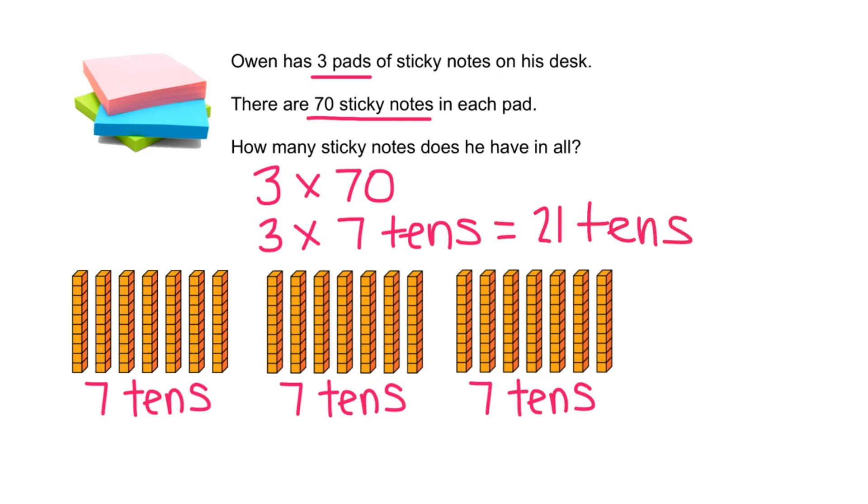That's a lot of tens. We'll regroup some to make hundreds. Here's one group of 10 tens, and here's another group of 10 tens. We have two groups of 10 tens, and each one is 100. So we have two hundreds and one more 10. That's 210.